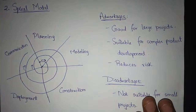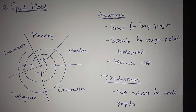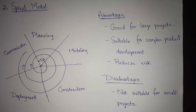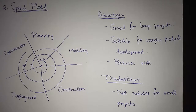Now we go with the spiral model. The spiral model couples the iterative nature of prototyping with the controlled and systematic aspects of the waterfall model. Spiral model was proposed by Boehm, and it is the iterative nature of prototyping with controlled and systematic aspects of the waterfall model.